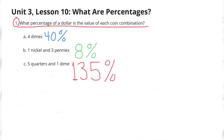Four dimes is 40% of $1. One nickel and three pennies is 8% of $1, and five quarters and one dime is 135% of $1.